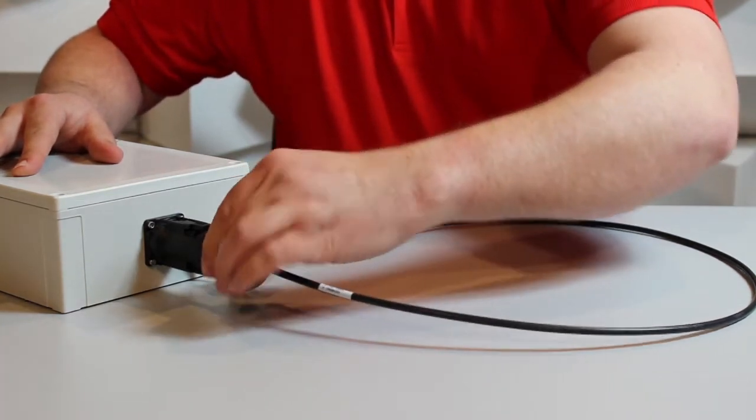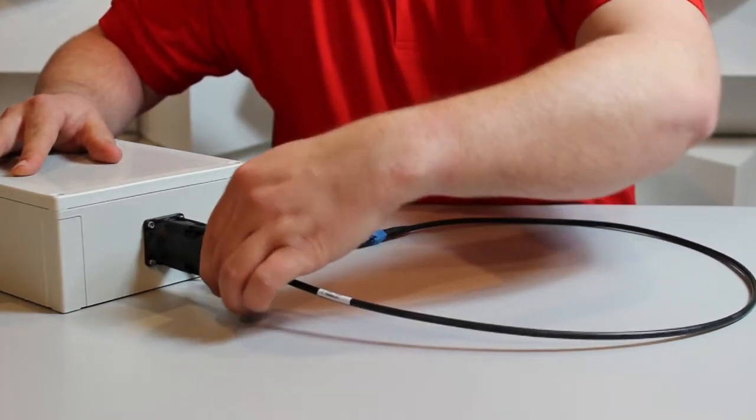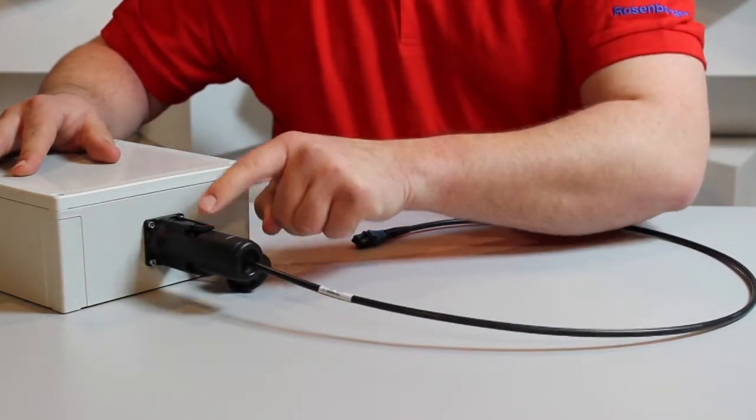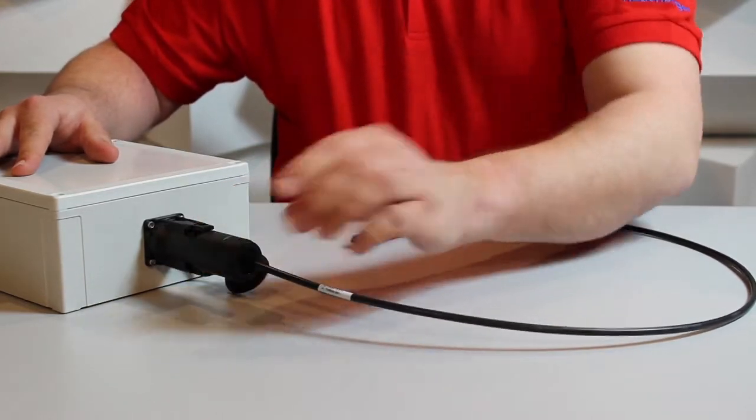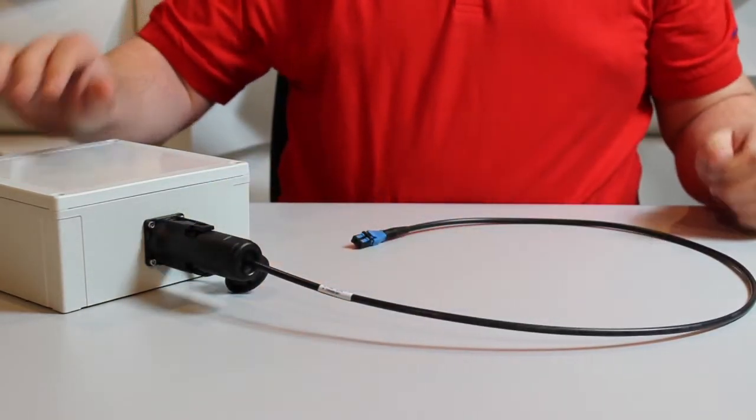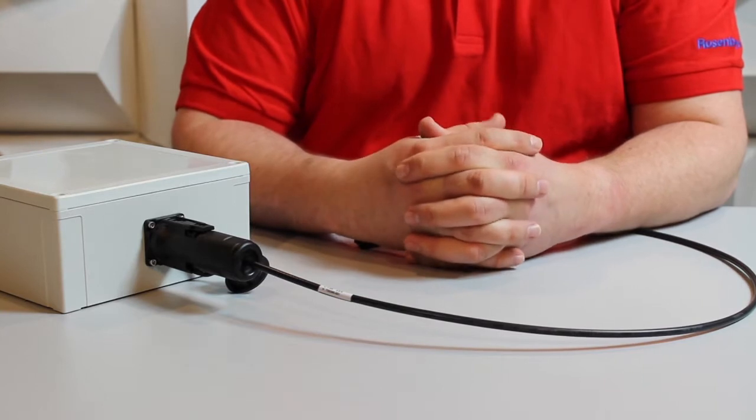At this point we screw the back nut into position so that the latches can't be activated anymore. What we have now is a secure protected cable.